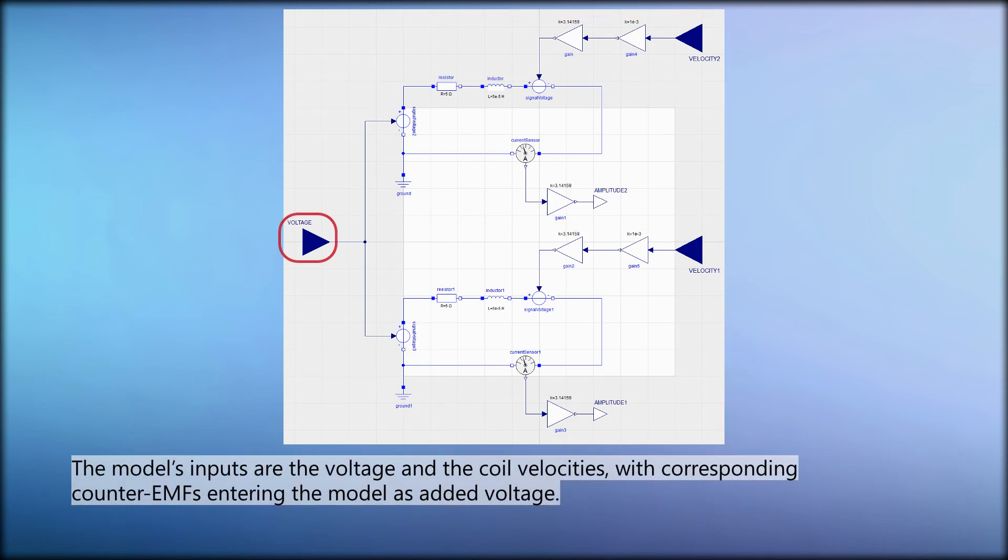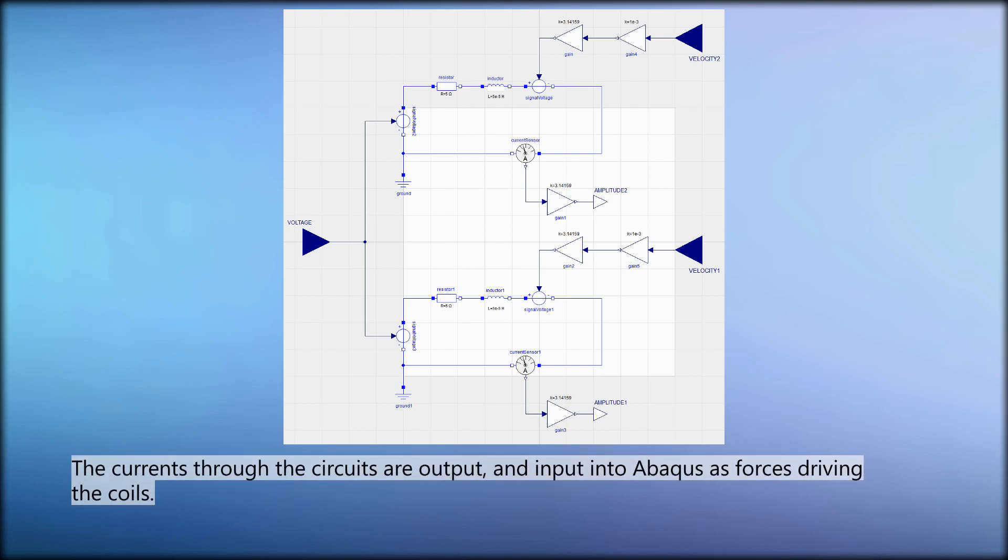The model's inputs are the voltage and the coil velocities, with corresponding counter EMF entering the model as added voltage. The currents through the circuits are output and input into Abacus as forces driving the coils.